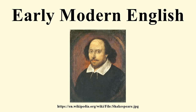Early Modern English is the stage of the English language used from the beginning of the Tudor period until the English Interregnum and Restoration, or from the transition from Middle English in the late 15th century to the transition to Modern English during the mid to late 17th century.